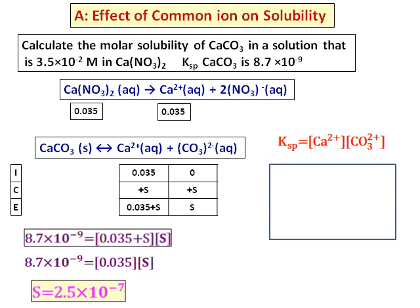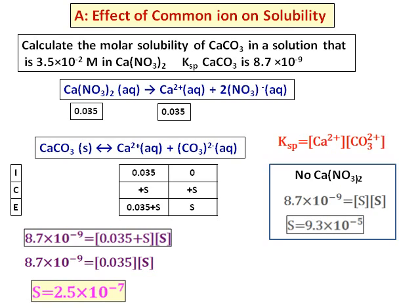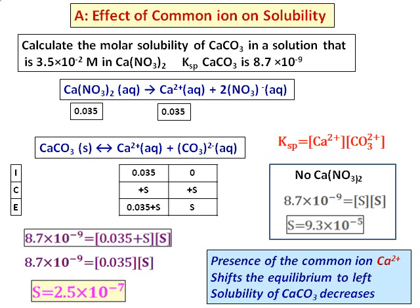Now let's compare with the situation where there is no calcium nitrate. Without calcium nitrate, we use the solubility product of calcium carbonate: 8.7 × 10⁻⁹ = S², giving S = 9.8 × 10⁻⁵ M. Comparing the two values, solubility is much lower when calcium nitrate is present. The common ion, calcium ion, shifts the equilibrium to the left and solubility of calcium carbonate decreases.